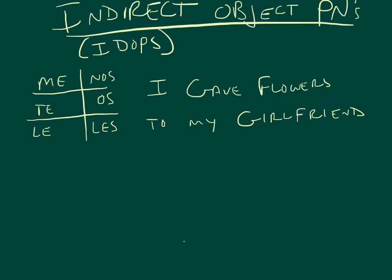Now, an indirect object pronoun, well an indirect object noun, is to whom or for whom the action is being done. Okay, so let's take a look at it in English.